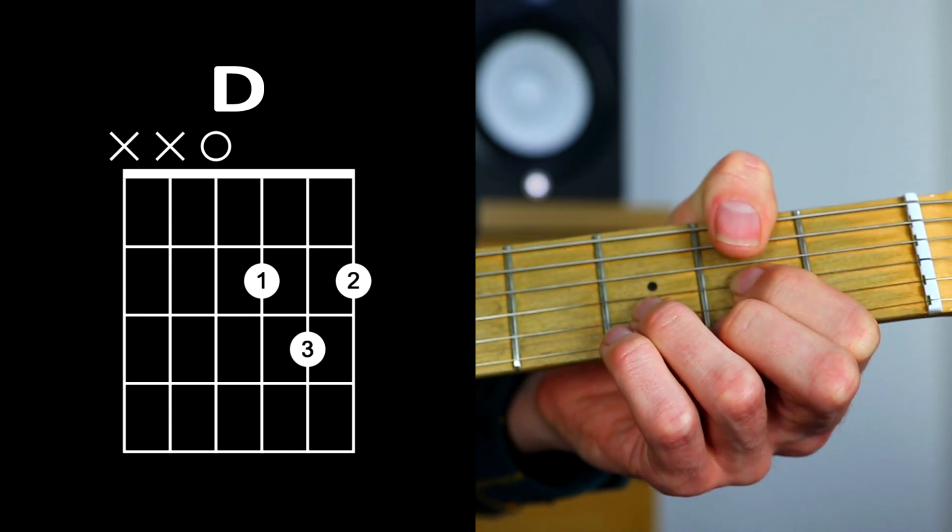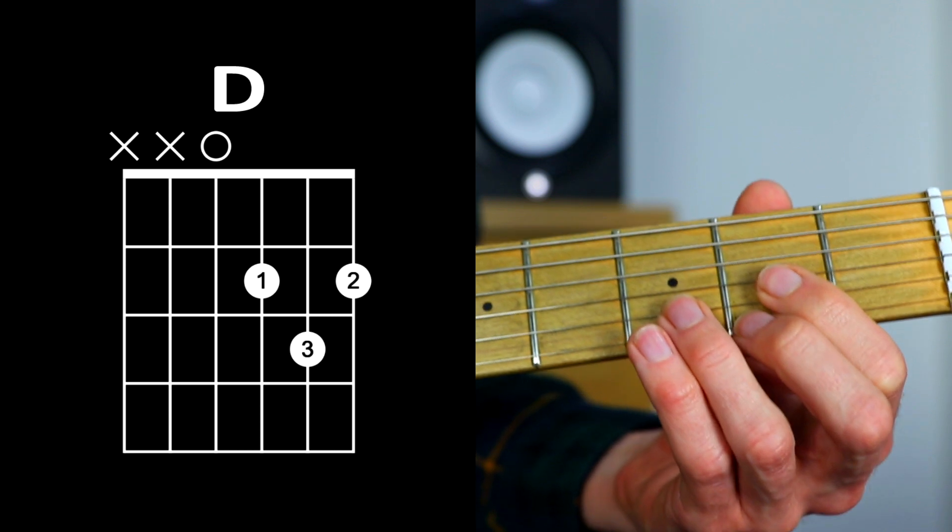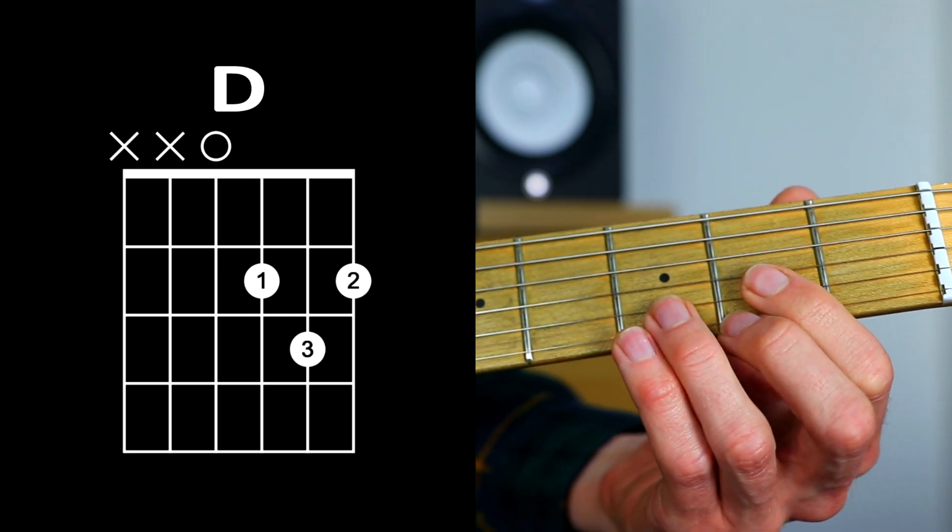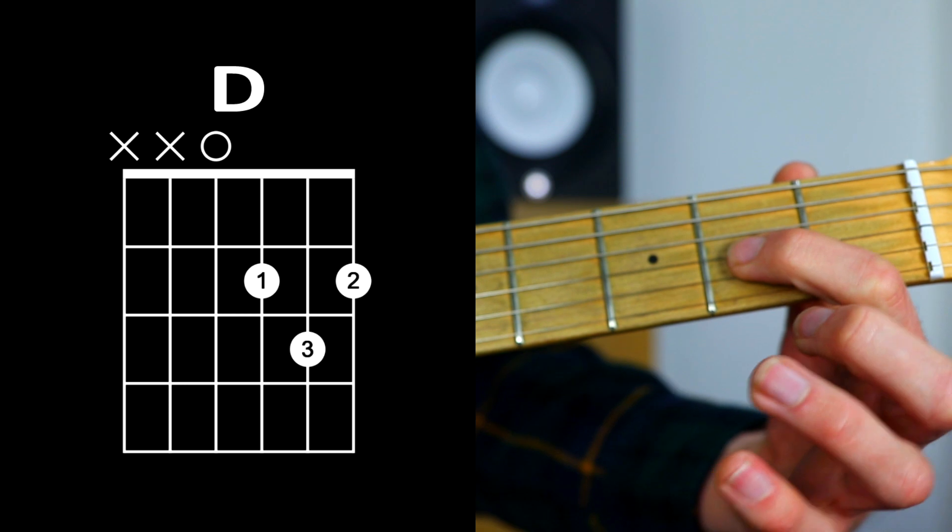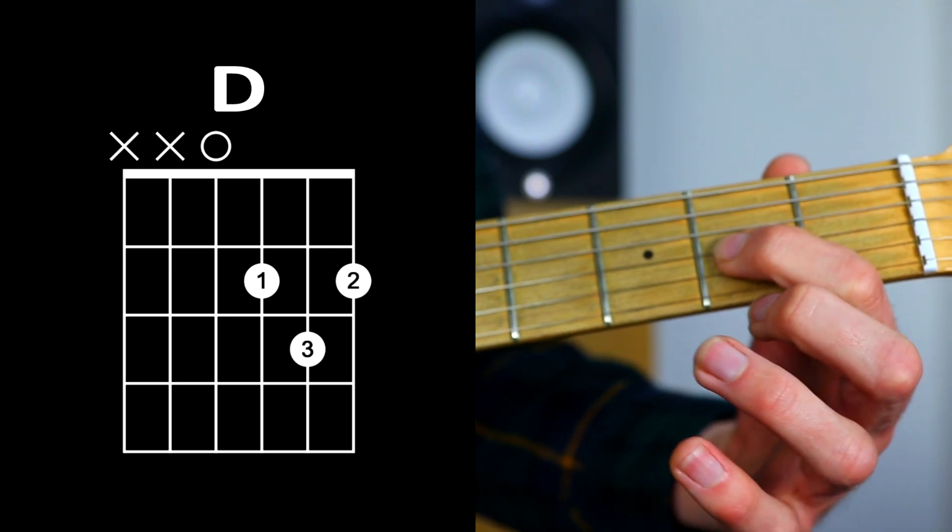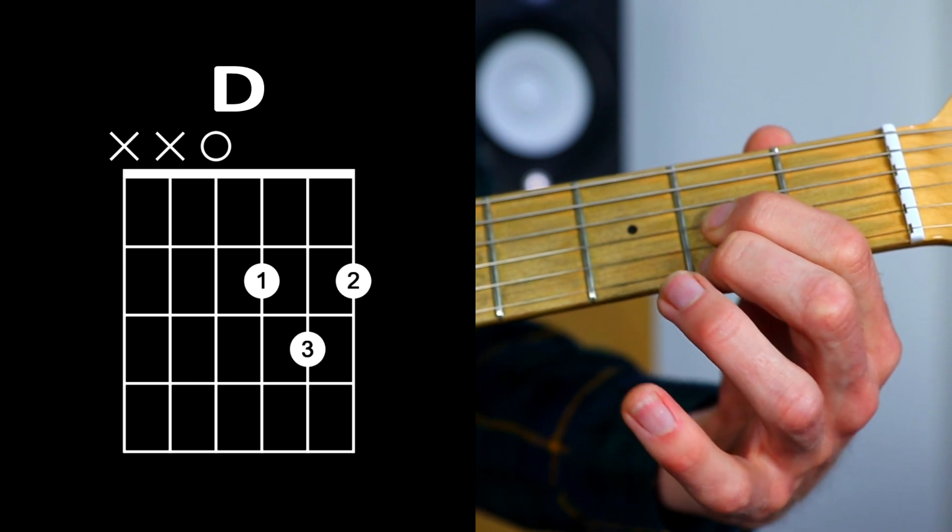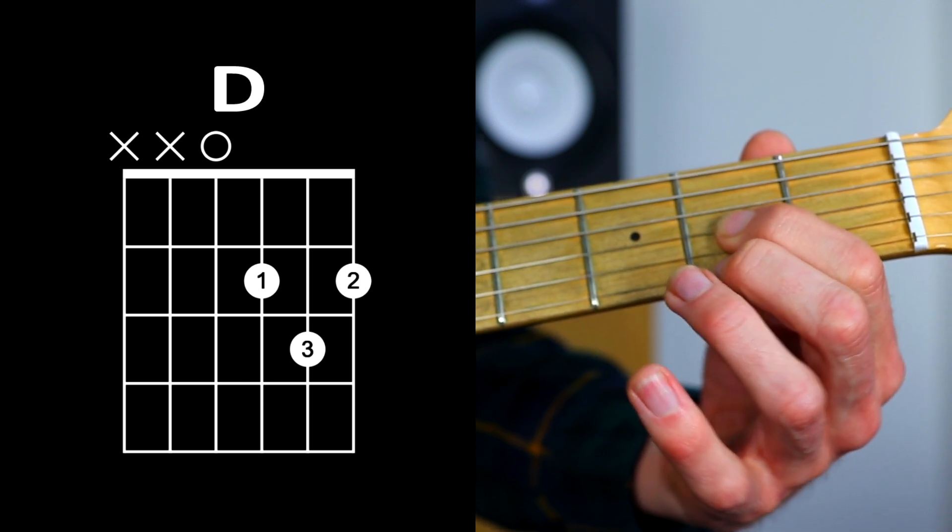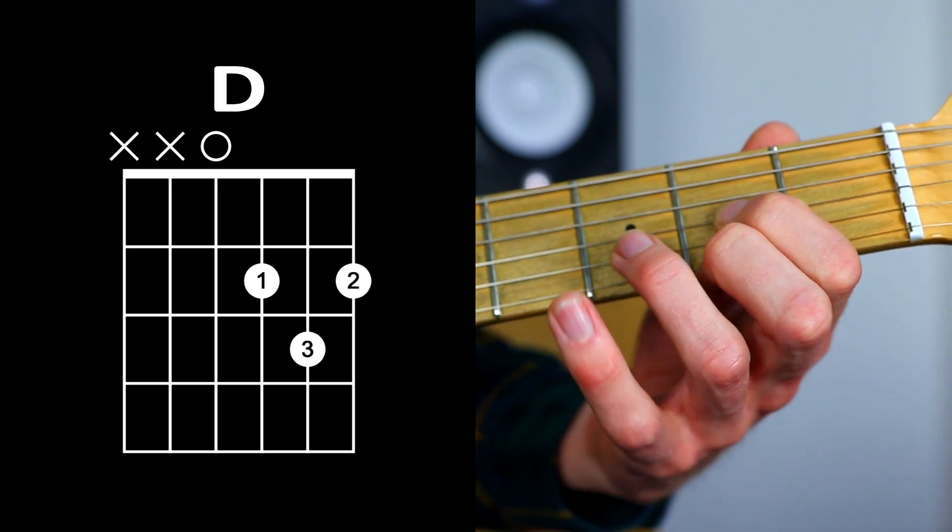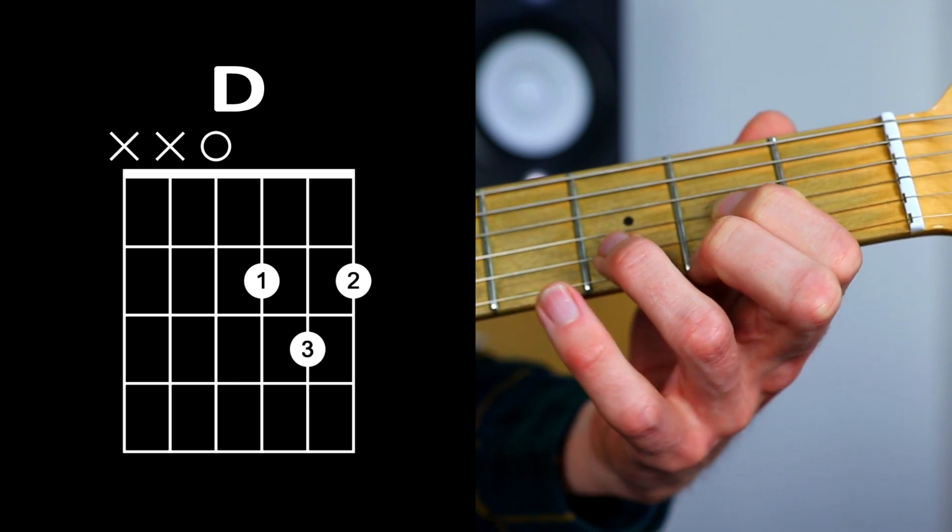As for how to actually play the chord: place the first finger on the second fret of the G string, the second finger on the second fret of the high E string, and the third finger on the third fret of the B string.